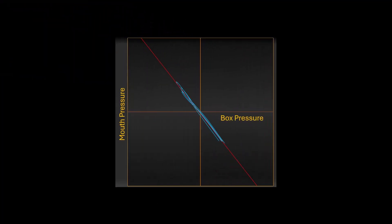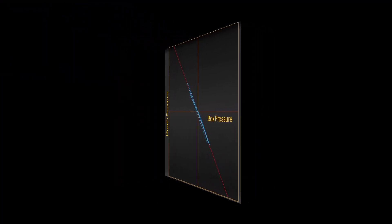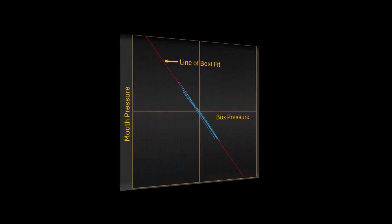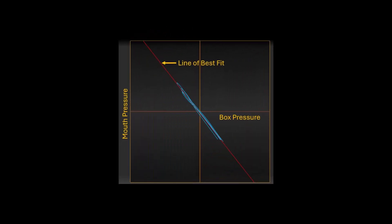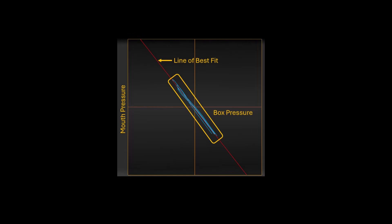we close the mouth shutter and ask the subject to gently pant. The tracing that is displayed measures mouth pressure over box pressure. The solid red line that goes through the tracing is called the line of best fit. The computer uses all of the data points from the tracing and places the line of best fit through the average of those data points.